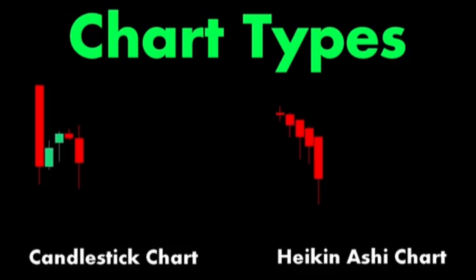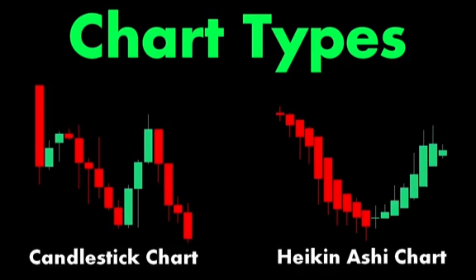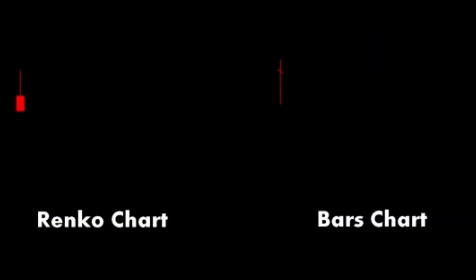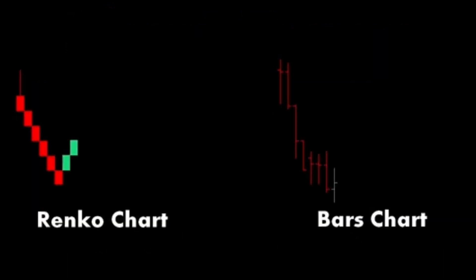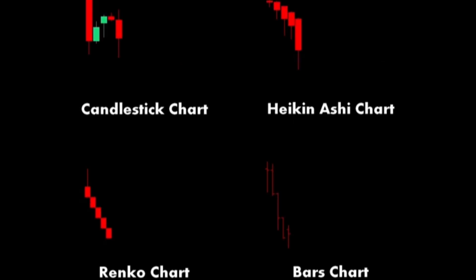Here are explanations of the different chart types commonly used in forex trading. 1. Candlestick chart. Structure: Each candlestick represents a specific time period, e.g. one hour or one day, and shows four key pieces of information: the opening price, closing price, high price, and low price within that period.